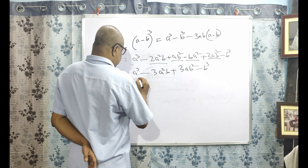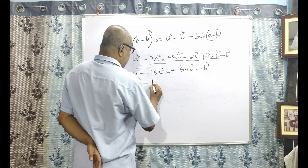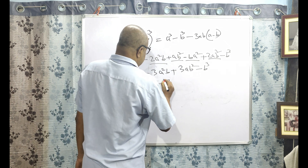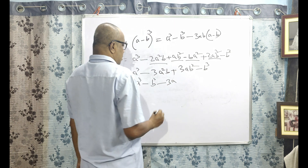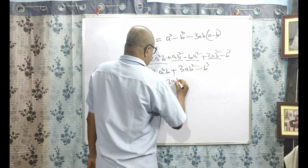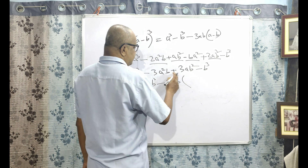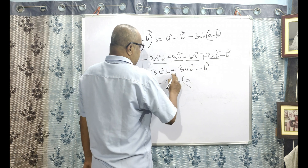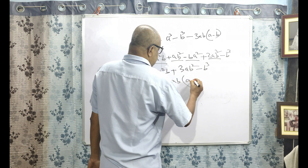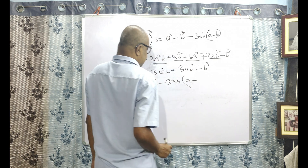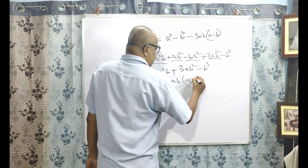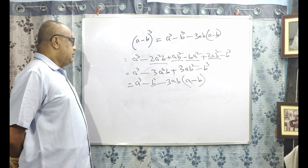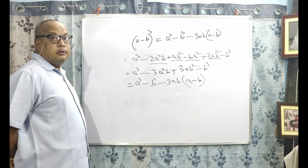So this is equal to A cube minus B cube, then taking 3AB common — since it is minus 3AB, the plus is converted to minus — giving minus 3AB into A minus B, which is the result.